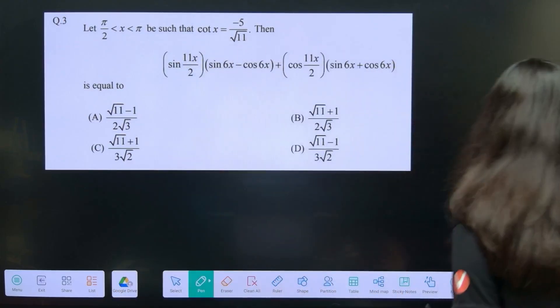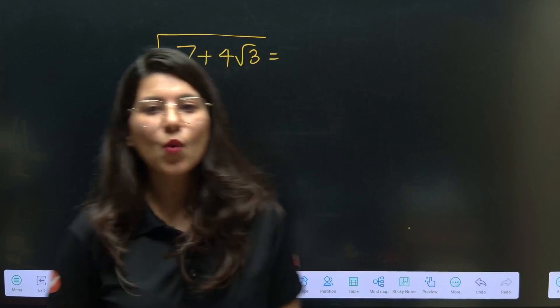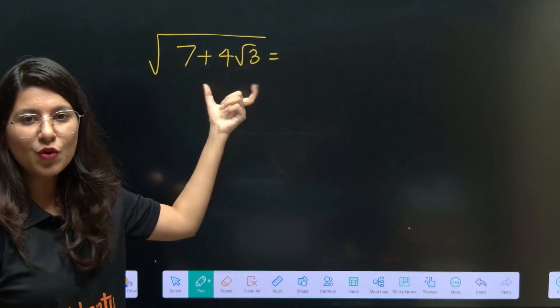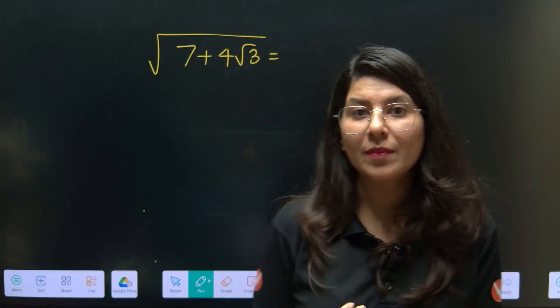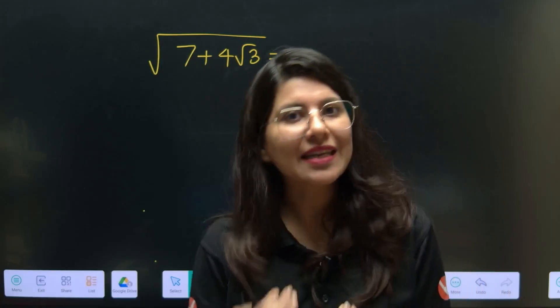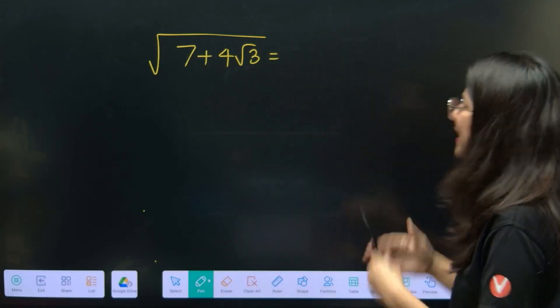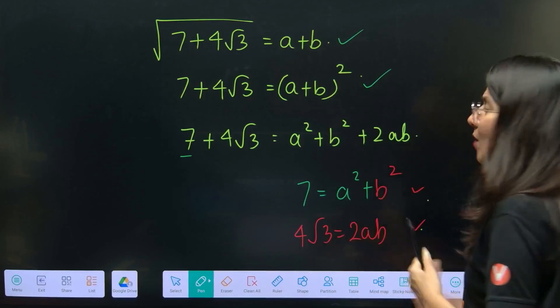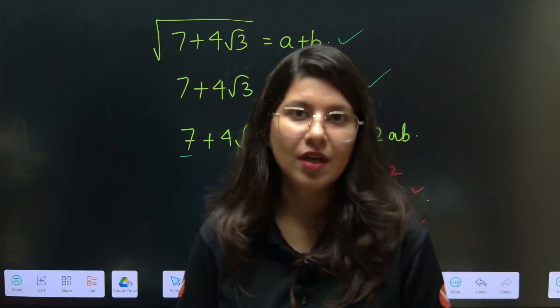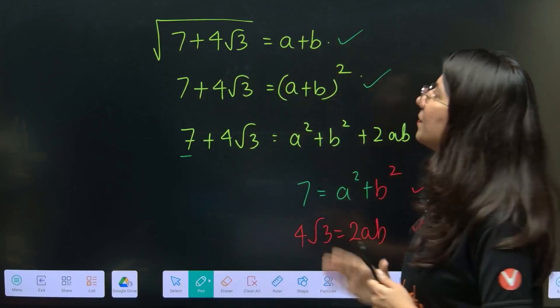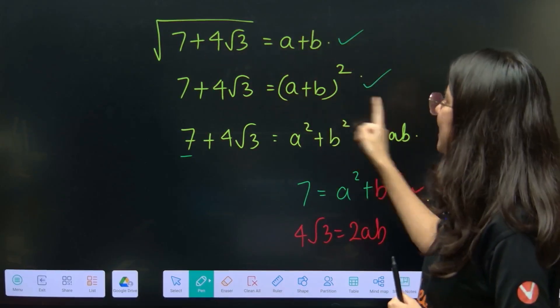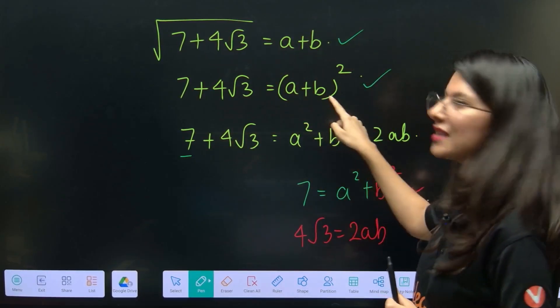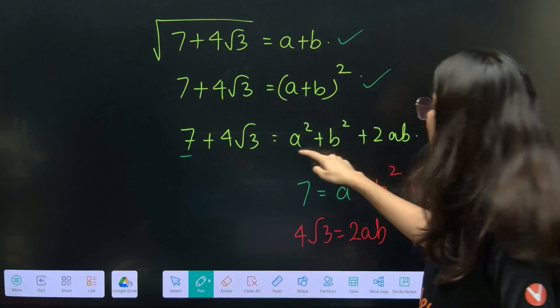So what is that technique? Clearly, this is square root of 7 plus 4 root 3. How to find square root of such numbers? Finding square root of irrational numbers, obviously the bigger, the long method, the traditional approach is square root of 7 plus 4 root 3 equals let's say A plus B. Squaring both sides gives you 7 plus 4 root 3 equals A plus B whole square, which is this.